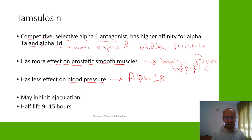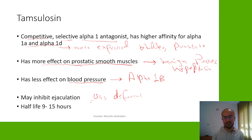Tamsulosin may also inhibit ejaculation by the same mechanism — alpha-1 receptors are present in the vas deferens, and blocking them may cause relaxation and ejaculation inhibition. The half-life of tamsulosin is 9 to 15 hours.